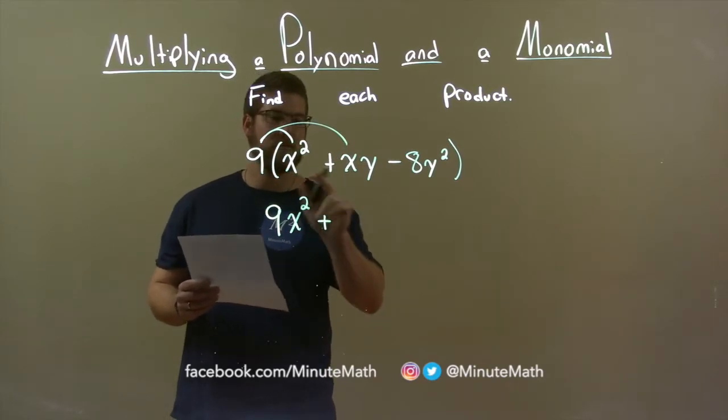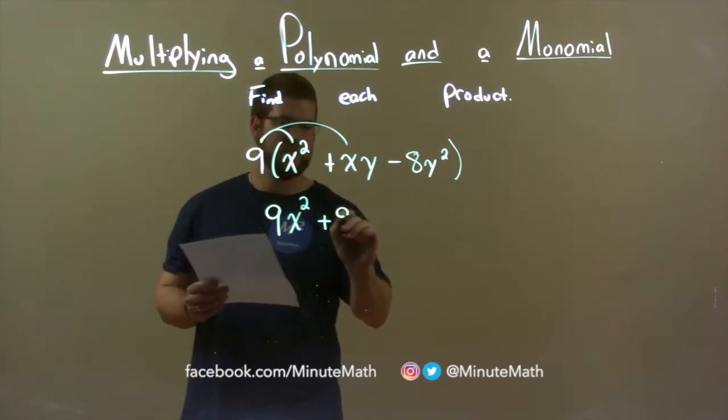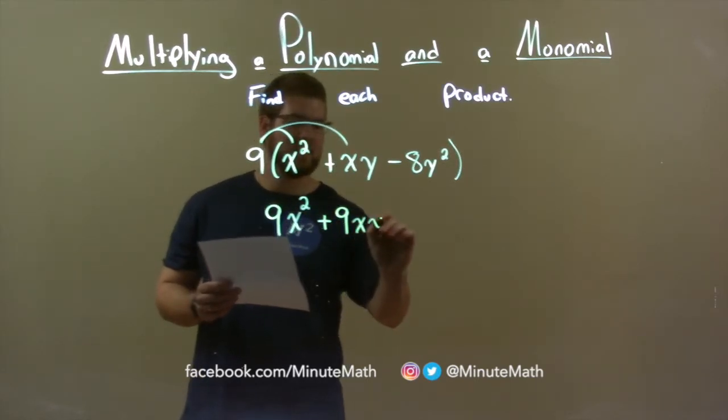Now, addition separates the two terms, but no coefficient out here except for the 1. So, 9 times 1 is 9, and we just bring down the x, y.